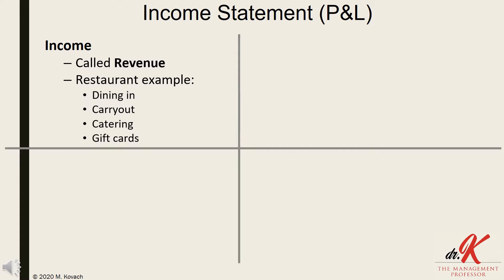You could break any category into the form of payment, like cash or credit card, and you could even further dissect each category. So for patrons dining into a restaurant, you could categorize them by time of day — meaning breakfast, lunch, or dinner — and even further with walk-ins and reservations.